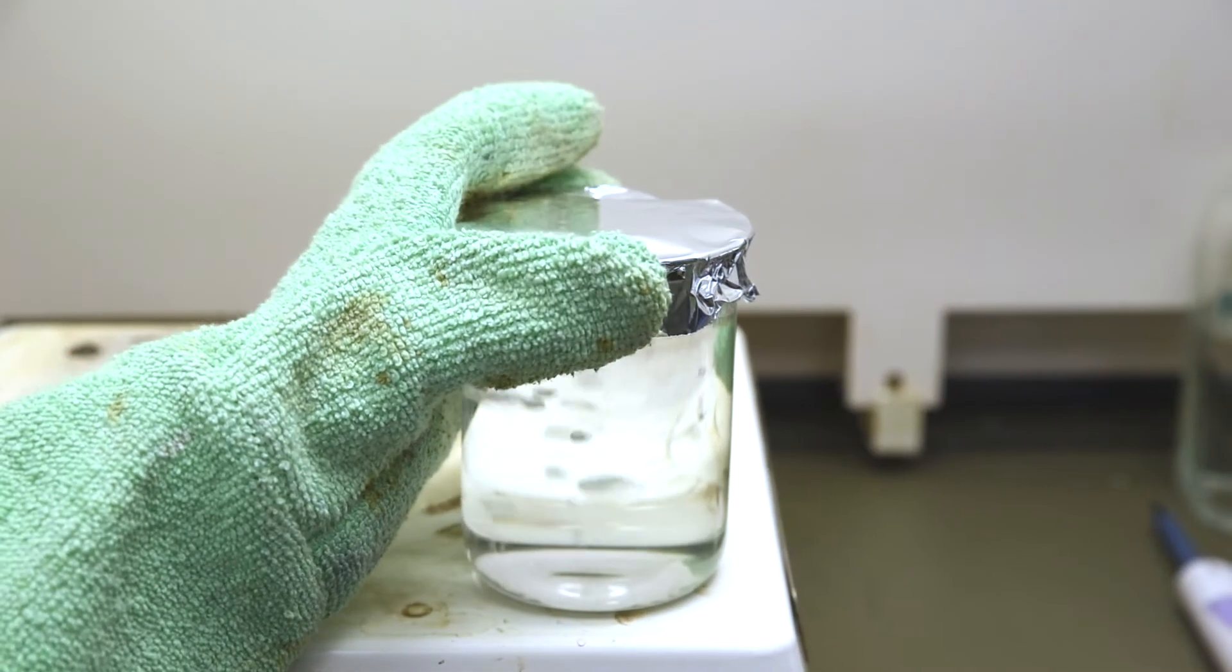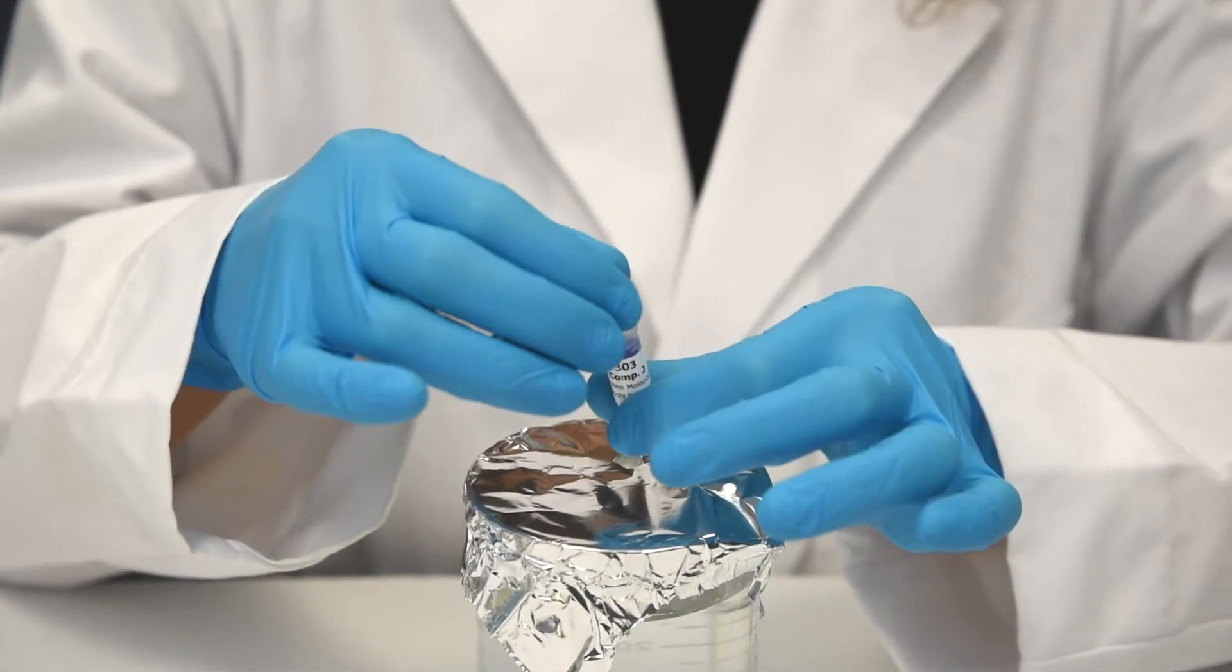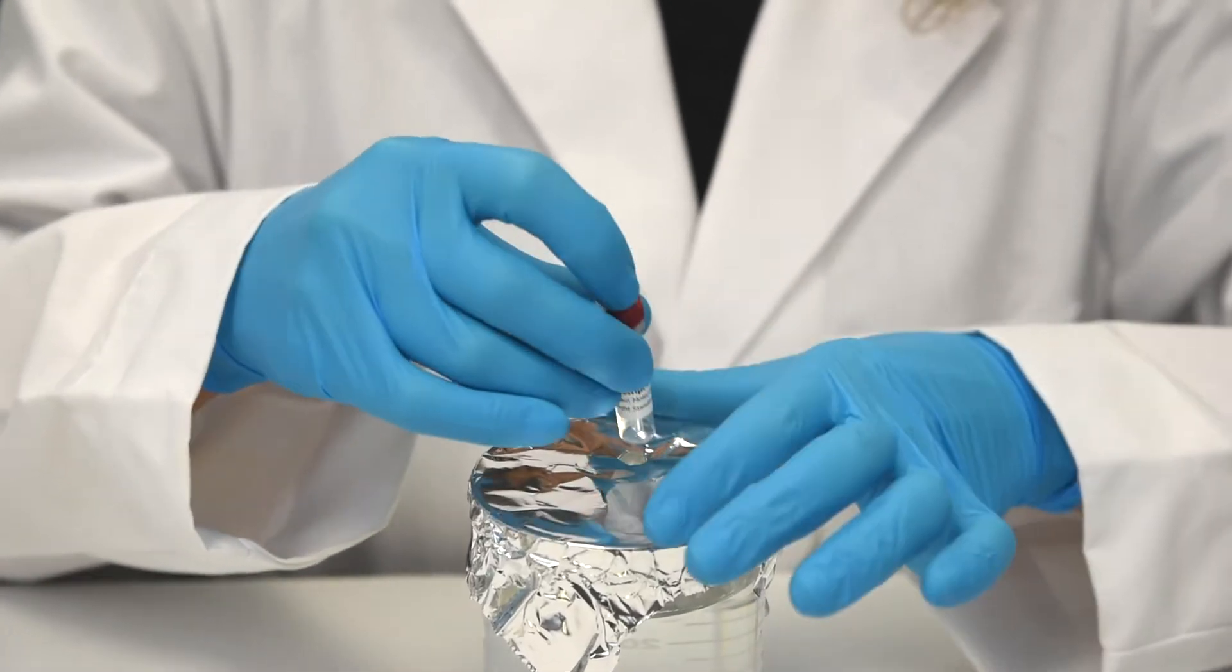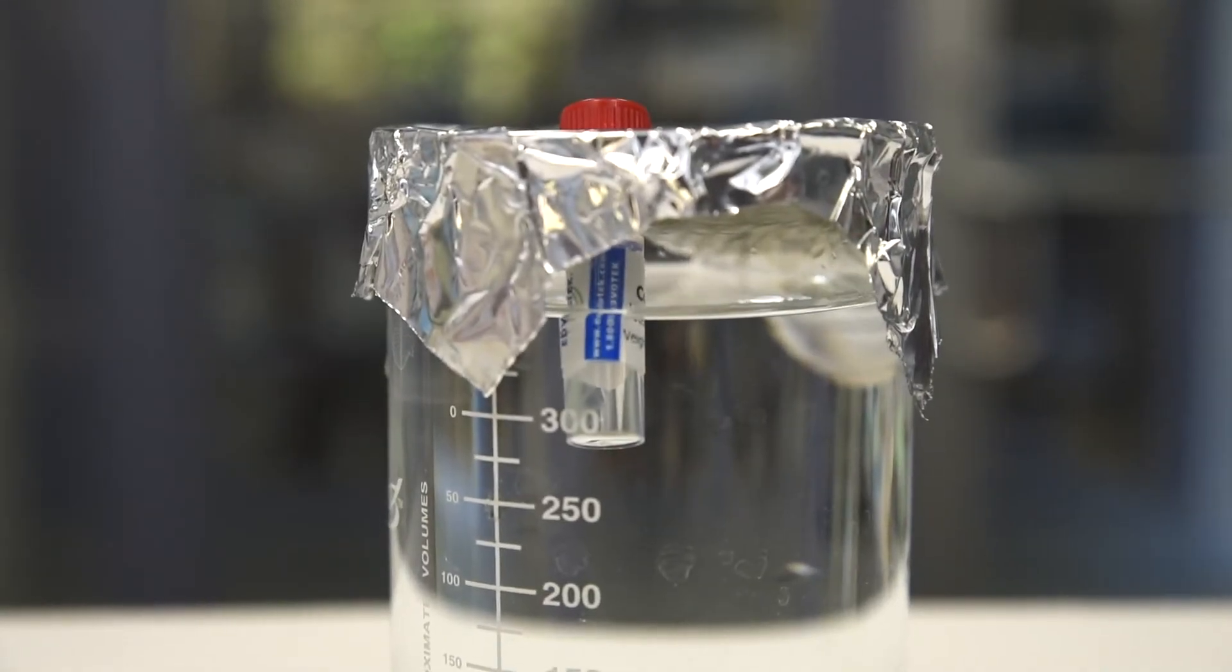Step three, make sure the tube is tightly capped. The bottom of the tube should be pushed through the foil and immersed in boiling water for five minutes. The tube should be kept suspended by the foil.